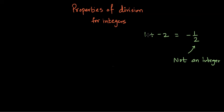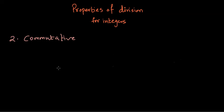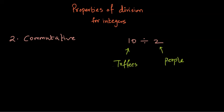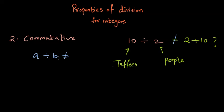Now we want to see whether the commutative property is followed. Whenever you choose any two numbers from the integer set, say 10 divided by 2 — that's like 10 toffees distributed among two people, so everybody gets 5. But is it equal to 2 divided by 10? It is not, because the meaning completely changes: it's like dividing 2 toffees among 10 people. So if a divided by b is not equal to b divided by a, the commutative property is not followed. Therefore, division is not commutative for integers.